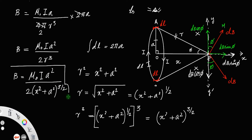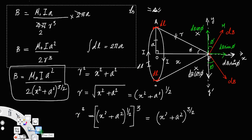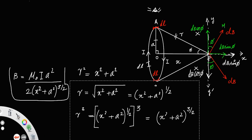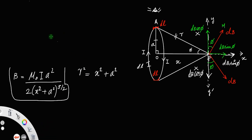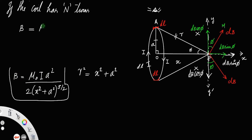This is the expression for the magnetic field produced by a circular coil carrying current on its axis. If the coil has N number of turns, then the magnetic field will be B = μ₀NIa² / [2(x² + a²)^(3/2)].